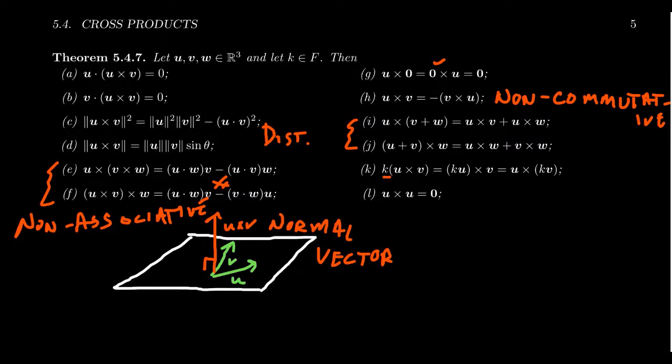If you have a scalar, K right here. If you take K times the vector U cross V, you could scale the first factor. You could scale the second factor. And so I want you to mention that if you put these things together, this shows that the cross product is bilinear.